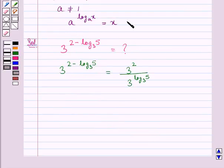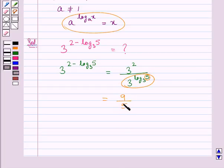Now, using the key idea in which we have the result that a to the power of log x to the base a is equal to x, the denominator of this is 5. So we get this is equal to 9 upon 5.